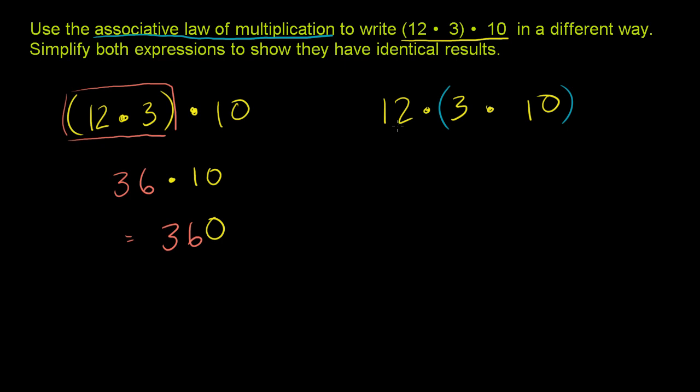And we're going to get the exact same answer as if we multiply the 12 times the 3, and then the 10. So let's just verify it for ourselves. So 3 times 10. 3 times 10 is 30.